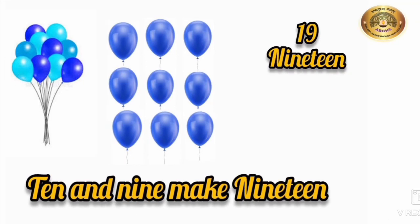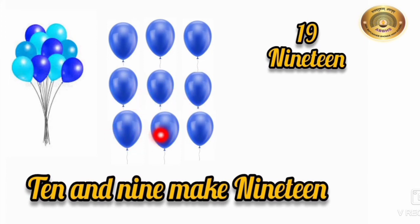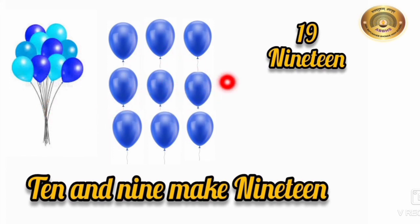The next number which comes after 18 is 19. Let's count these balloons: 1, 2, 3, 4, 5, 6, 7, 8, 9. So children, here we can see 9 more balloons. 10 and 9 make 19. The spelling of 19 is N-I-N-E-T-E-E-N. 19.